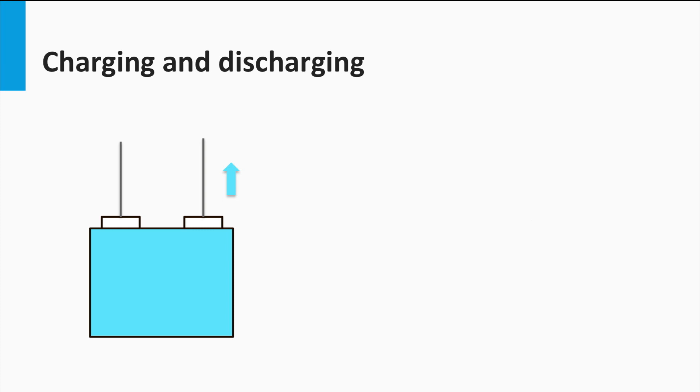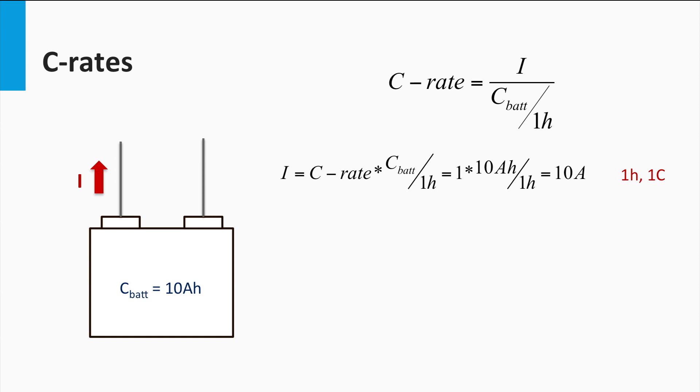We now come to another useful battery specification, called the C-rate. Let's first understand how the battery charges and discharges. As discussed in the previous video, the charging and discharging of the battery at the cell level is just the right kind of chemical reaction taking place. At an electric level, charging and discharging depend on the direction of current into and from the battery respectively. How does this relate to the battery capacity? This is where the C-rate comes in.